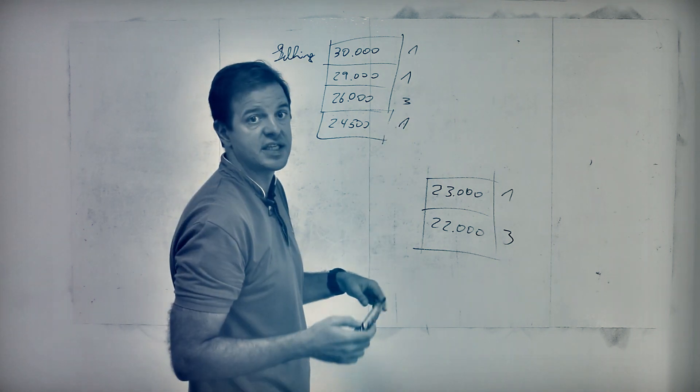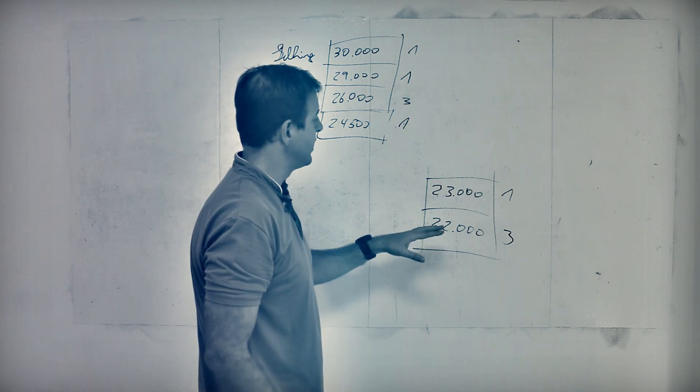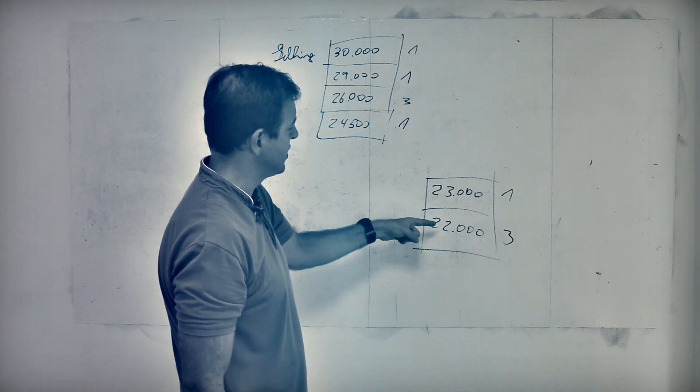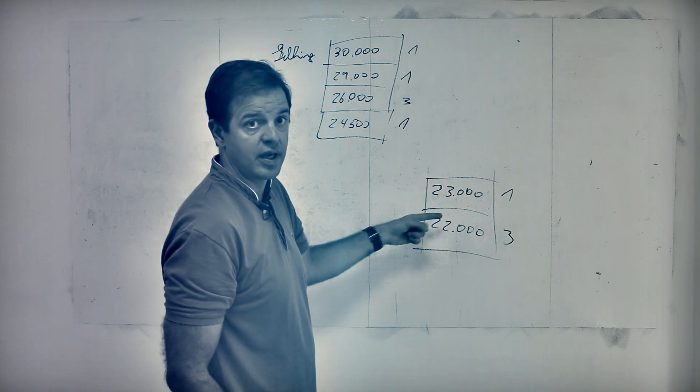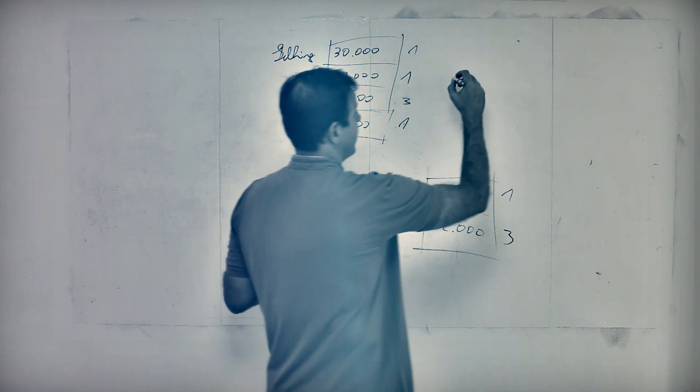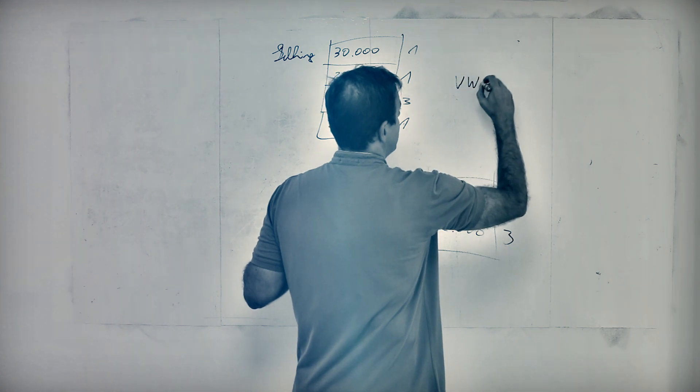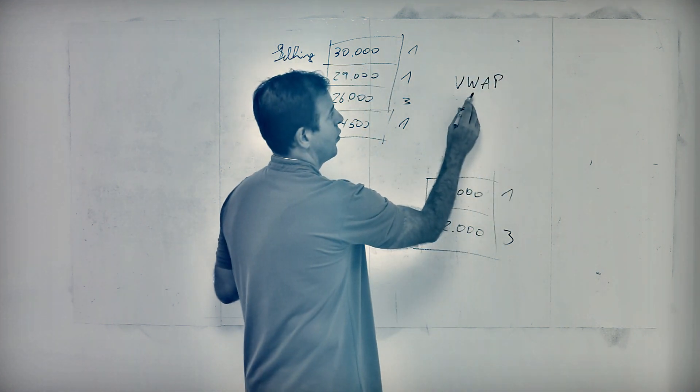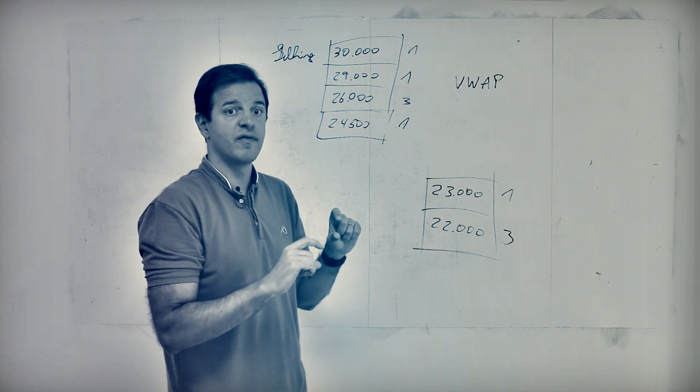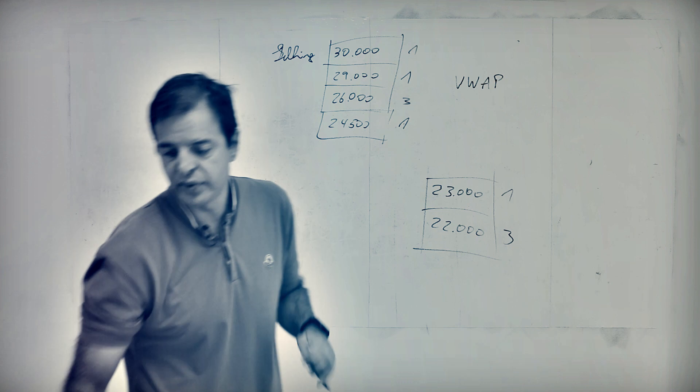And it would be the volume weighted average of one at this times three at that. I'm afraid age is catching up with me. I can't do that in my head anymore. And in this one, it would be £23,000, so £22,300, something like that. And then basically, the more, and that's the concept of VWAP.